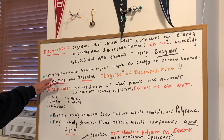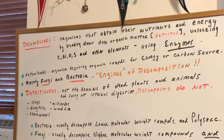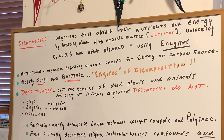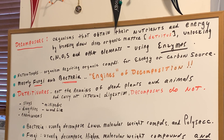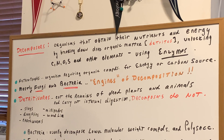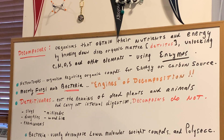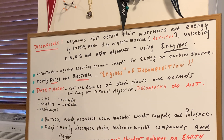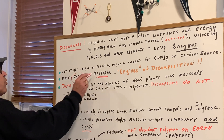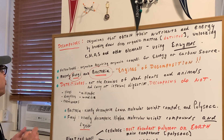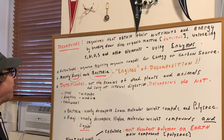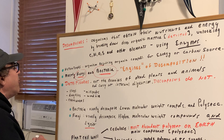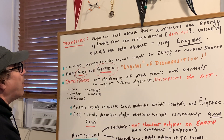We can classify decomposers as heterotrophs. These are organisms requiring organic compounds for energy or for a carbon source. Decomposers are mainly fungi and bacteria — these are the engines of decomposition. That is a guaranteed question you will see on an exam. Don't forget, fungi are eukaryotic where bacteria are prokaryotic.